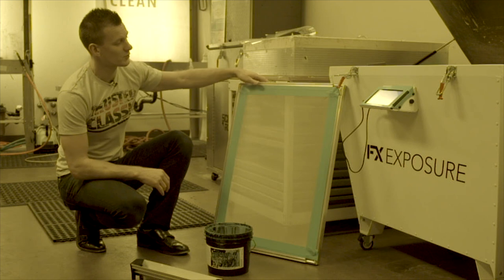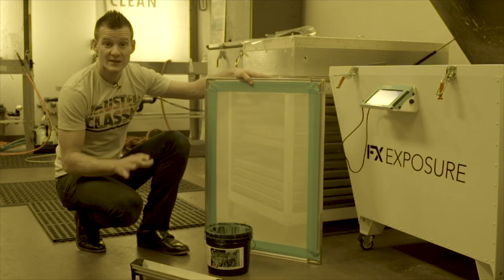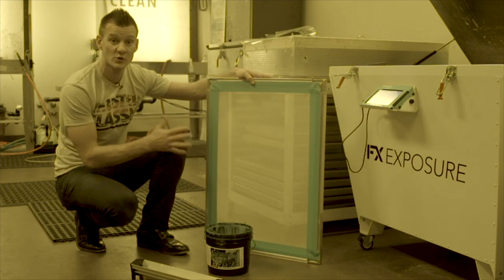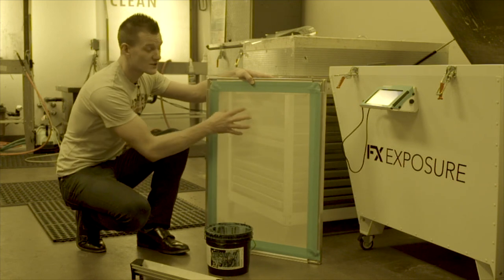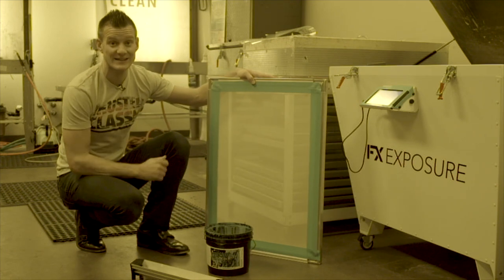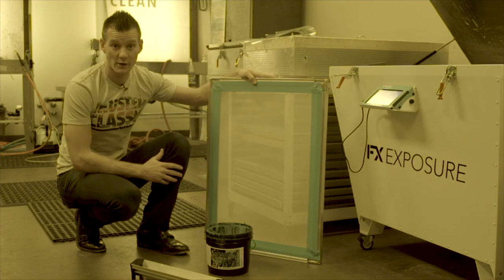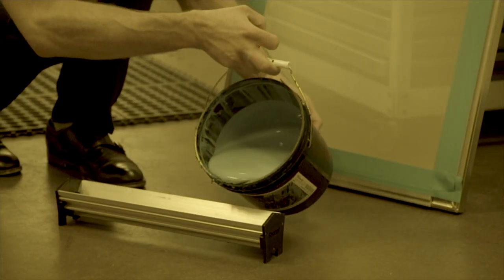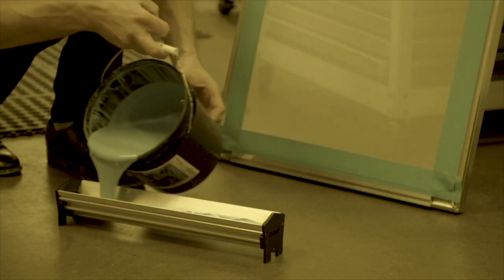For the coating process, we're going to be switching things up just a little bit. Instead of doing a 1 over 1 or a 1 over 2, we're going to be doing a 2 over 2 to ensure that emulsion works its way around the knuckles of the mesh and retains that detail as well as gives us a good EOM. We're going to be using the sharp side of the scoop coater because we don't need too high of an EOM.